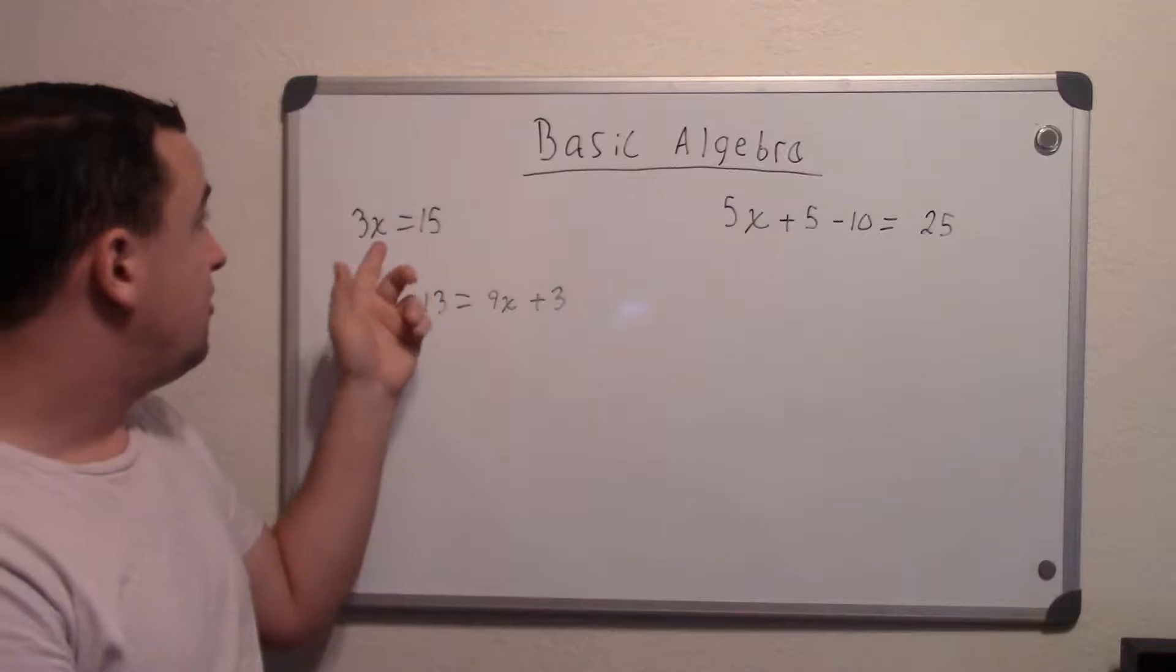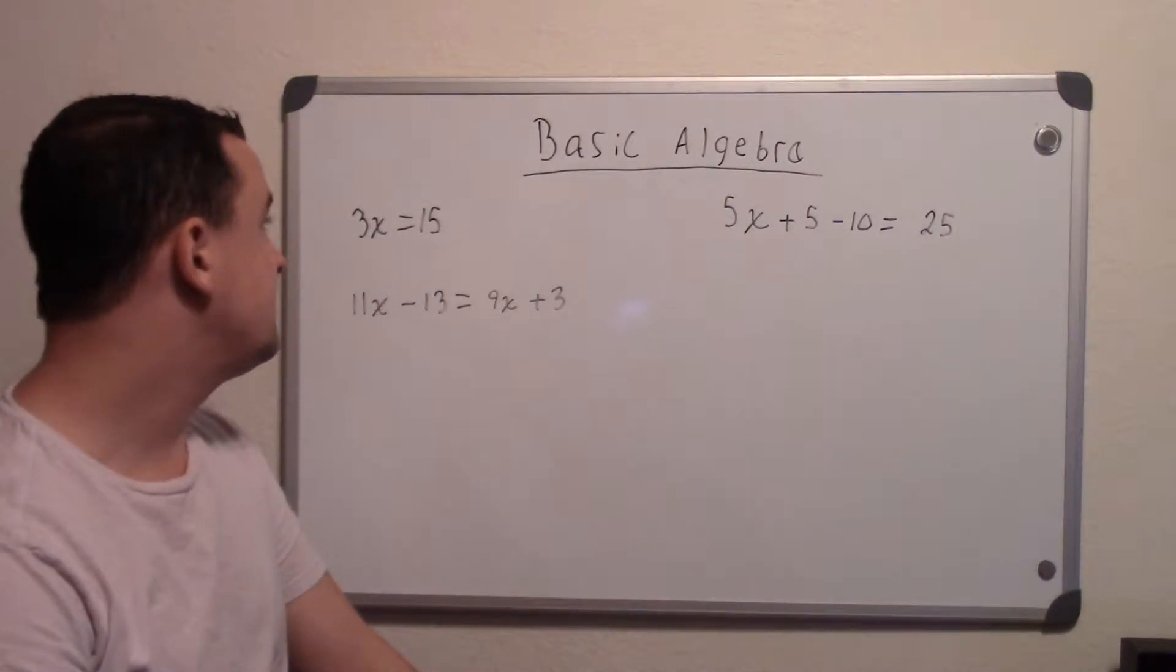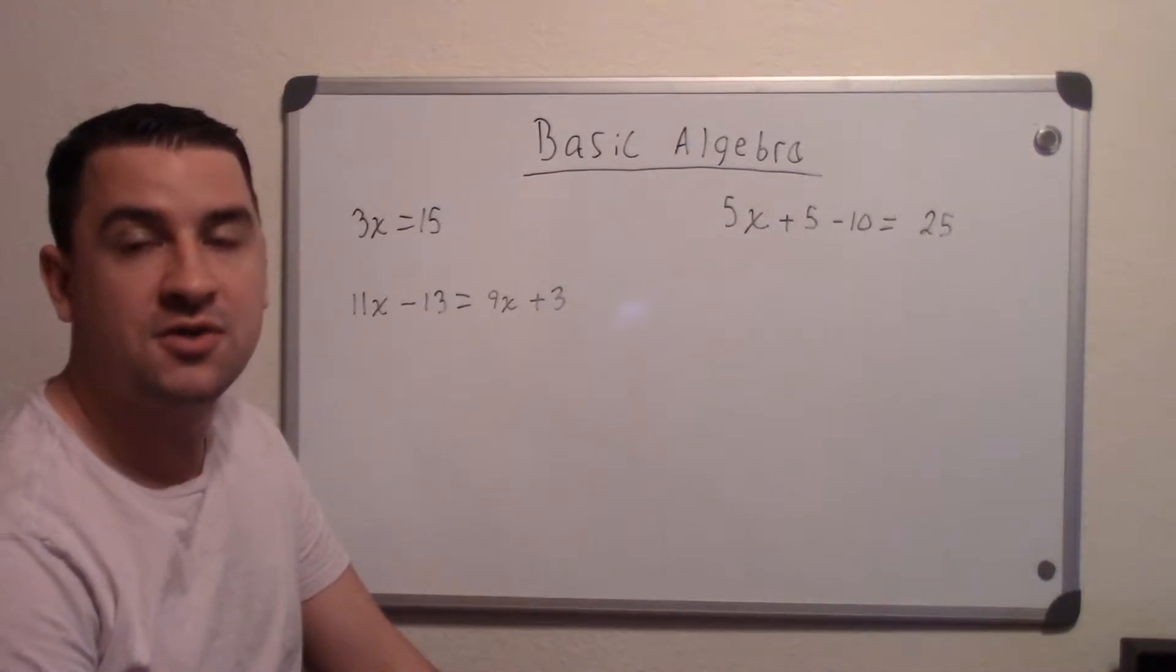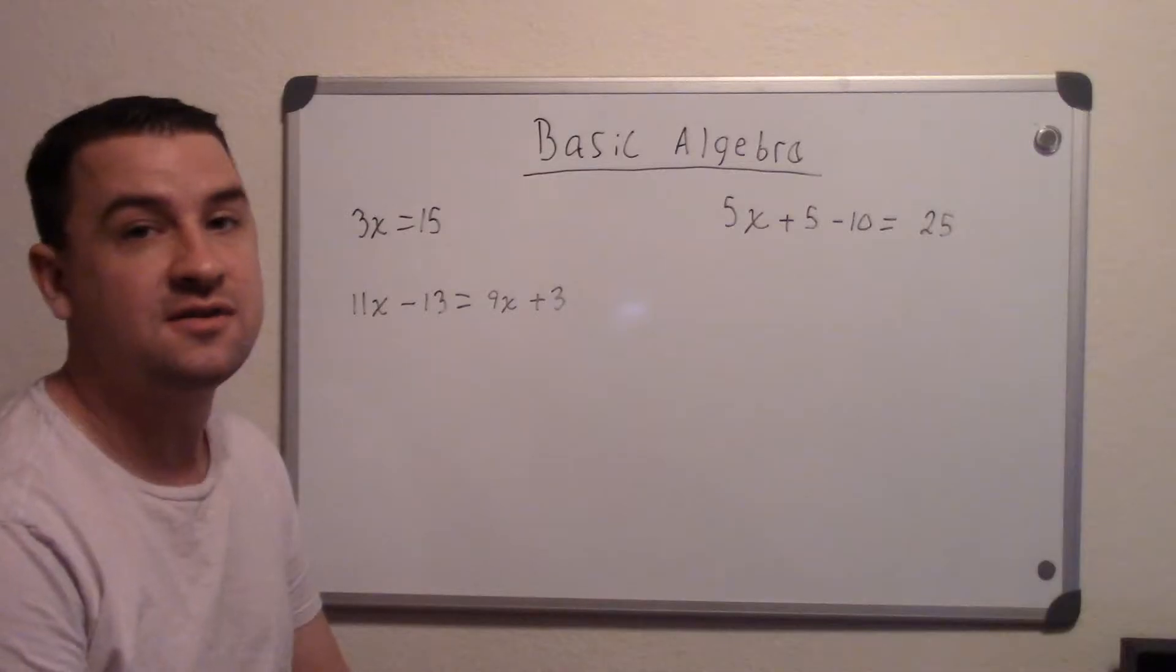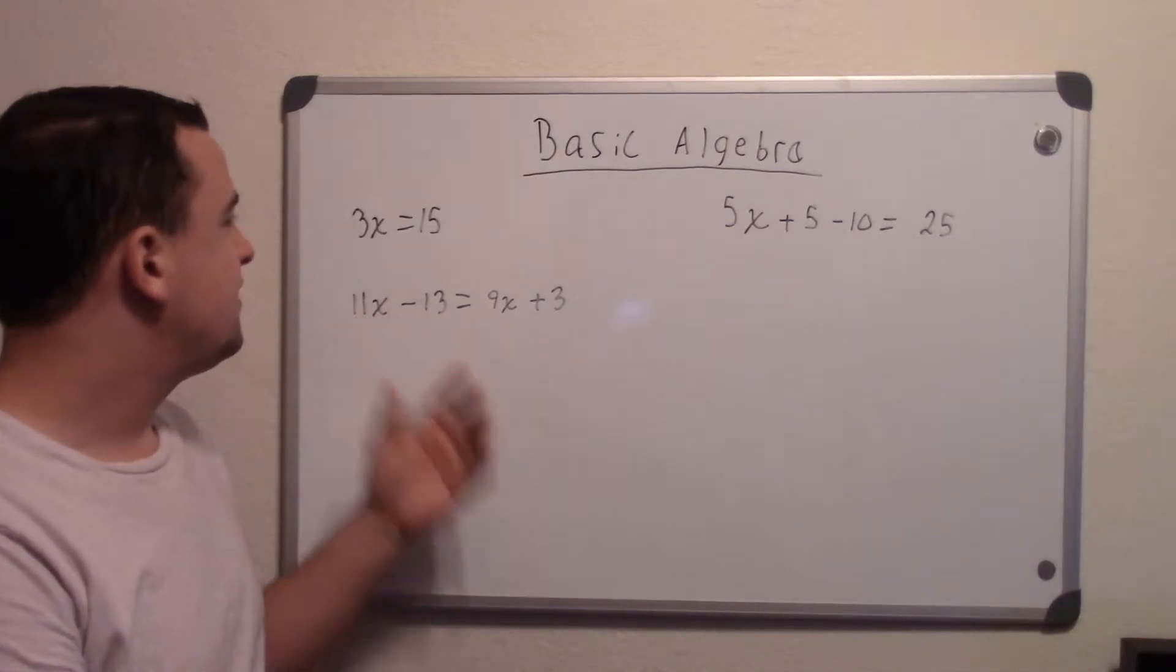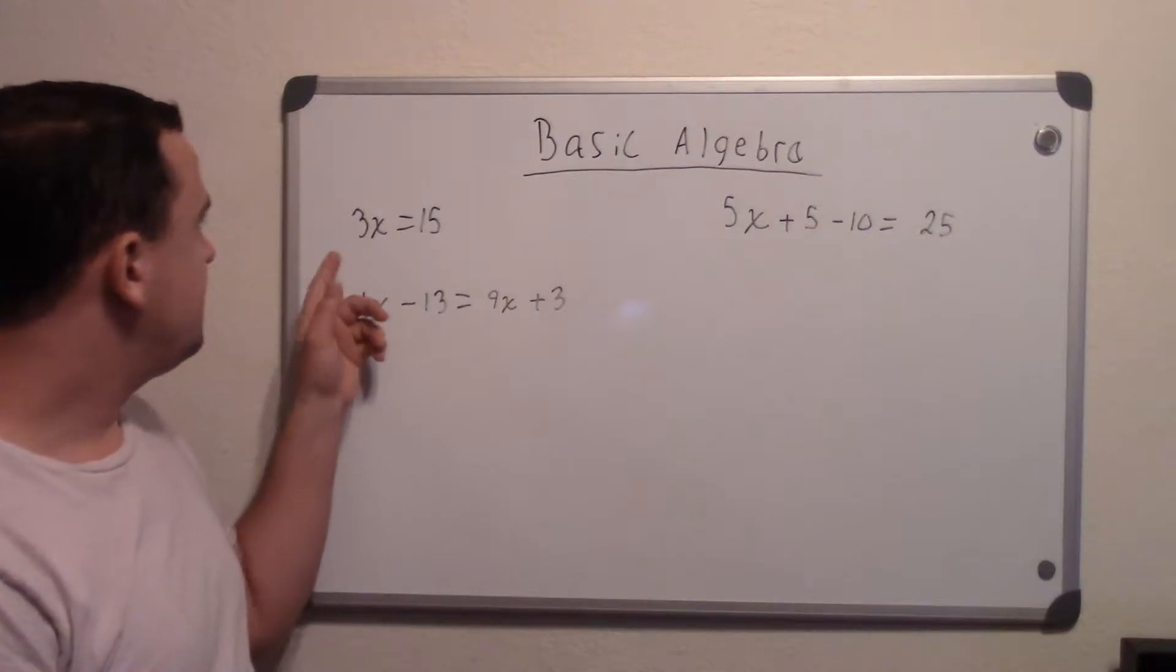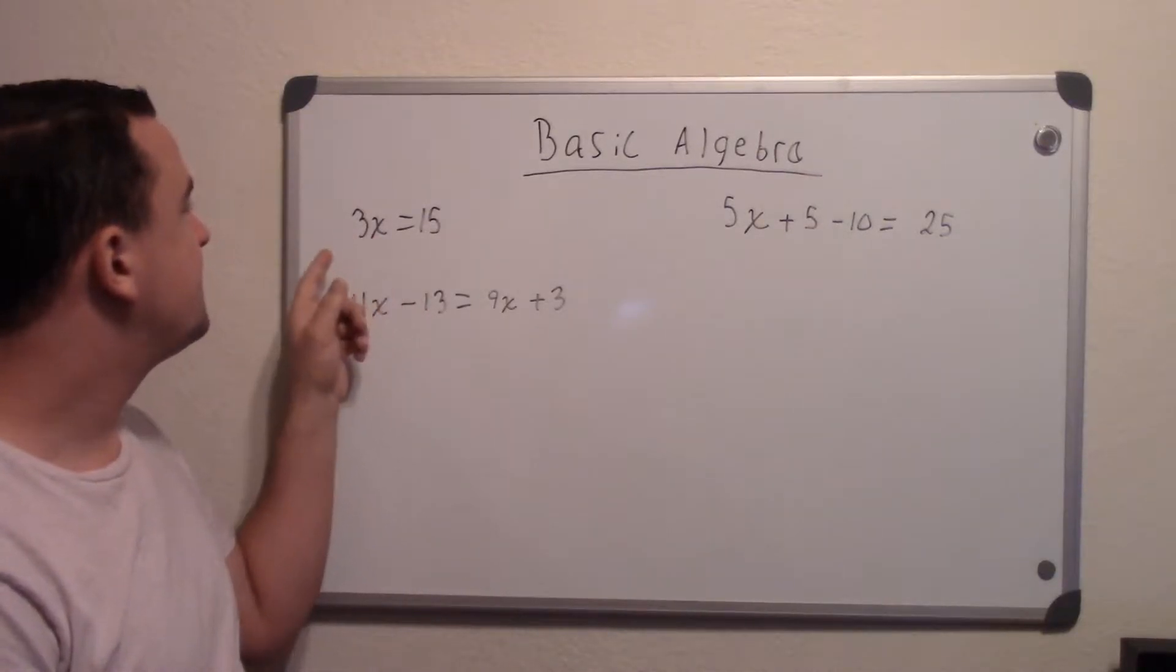And whatever x equals ends up being that answer. So in this case, we should get a whole number, x will equal a whole number. Sometimes when you get into higher math, you may still even have variables. Like when you get into multiple variables, sometimes x may equal 3y, and that's your answer. But this is just basic algebra, so getting an idea of what to do. So mainly what you're doing, whatever you do to get x, you want to get x by itself. So whenever something's being done to it, you do the opposite.